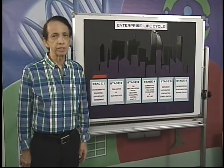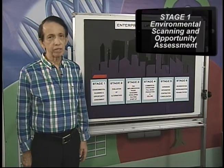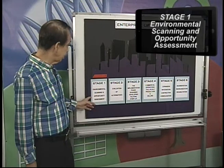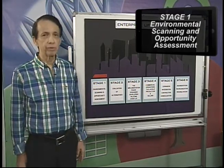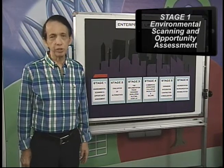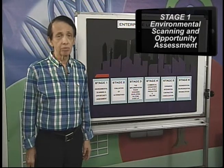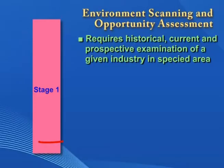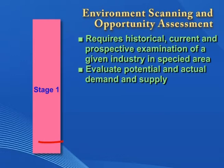Let us go through the six stages in the enterprise life cycle. Stage one is environmental scanning and opportunity assessment. The objective is to clearly determine the opportunities and highlight the risks or threats for establishing an enterprise. Environmental scanning requires a historical, current, and prospective examination of a given industry within a specified market area. The analyst evaluates the potential and actual demand and supply of the products or services generated by the enterprise. Opportunities for market penetration or exploitation are then derived from this demand-supply analysis.